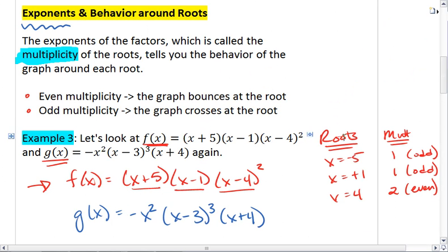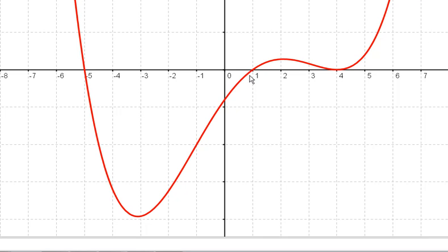Which also had an odd multiplicity, so again we cross the x-axis. We go up a little bit and then come back down to our last root at x equals positive 4. But the factor x minus 4 had a power of 2, an even multiplicity, which means we just touch the x-axis and we bounce back up. And we continue on going upwards.